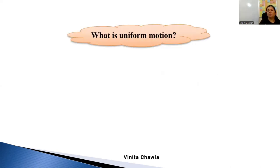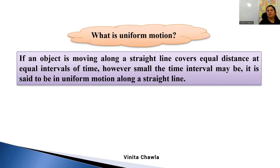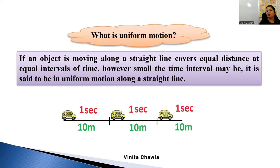Uniform motion is when an object covers equal distance in equal intervals of time, however small those intervals may be. This is said to be uniform motion.